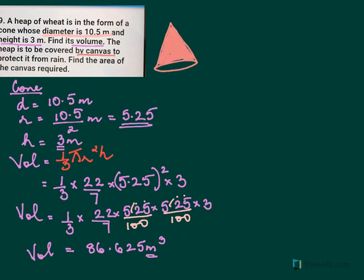So if you have to cover it, it is the CSA that you need to find. And you know the CSA of cone. CSA of cone, if you remember, the formula is pi RL. But in this sum, the R is given as 5.25. We have found it here, 5.25. And the height is given as 3.